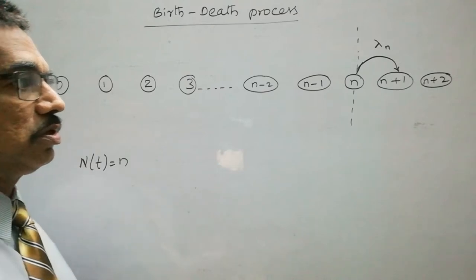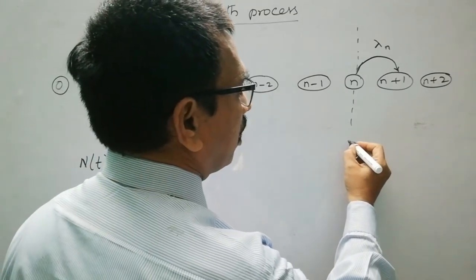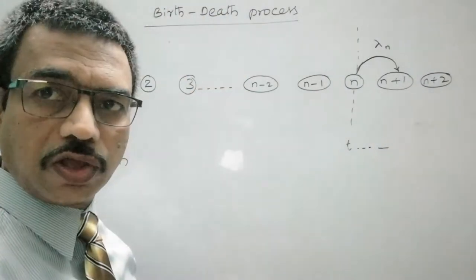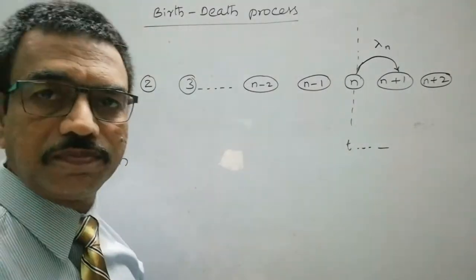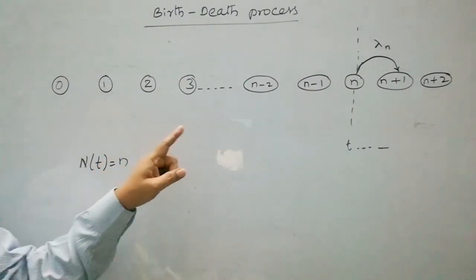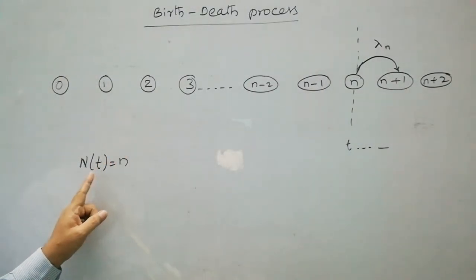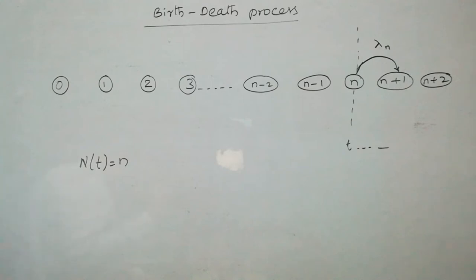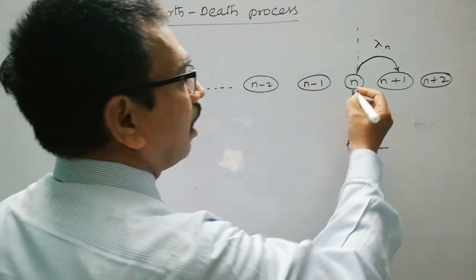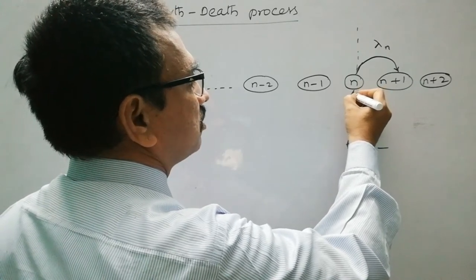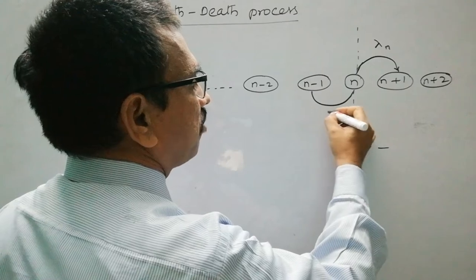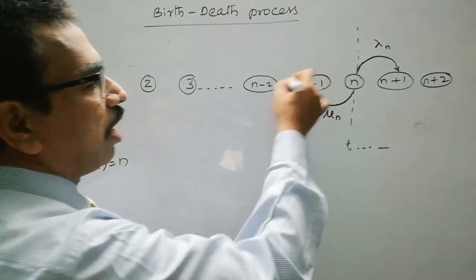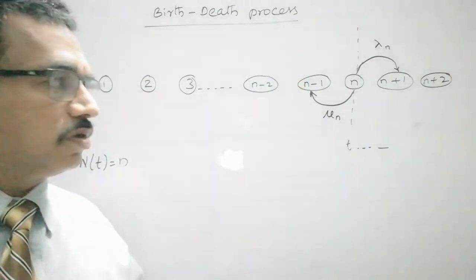For Assumption 2: at time t, the number of customers in the queuing system N(t) = n, then the current probability distribution of the remaining time until a service completion or death takes place follows exponential distribution with parameter mu_n. That means the state may move from n to n-1 with service completion to one of the existing customers.